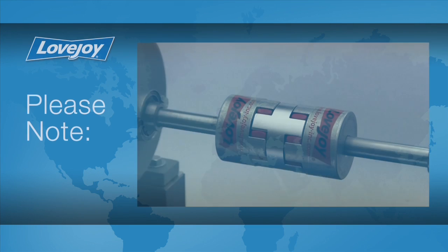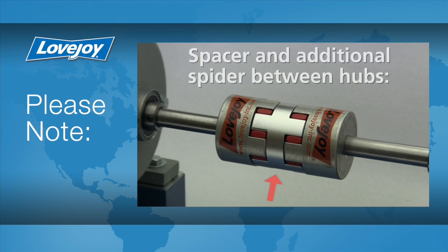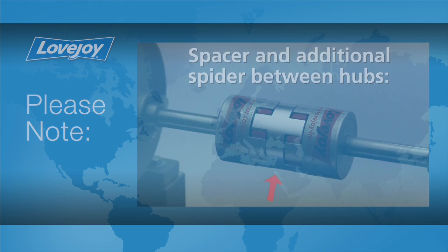The CJ SPC curved jaw coupling is very similar to the standard curved jaw coupling with a spacer and additional spider added between the hubs. This allows the CJ SPC coupling to span a larger gap than the standard curved jaw coupling while offering a slight increase in the amount of parallel misalignment the coupling can accommodate.